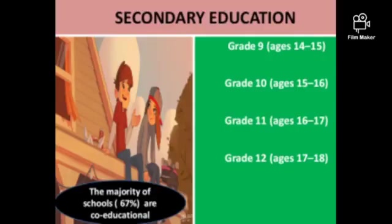Secondary education spans grade nine (ages fourteen to fifteen) through grade twelve (ages seventeen to eighteen). Sixty-seven percent of schools are co-educational.